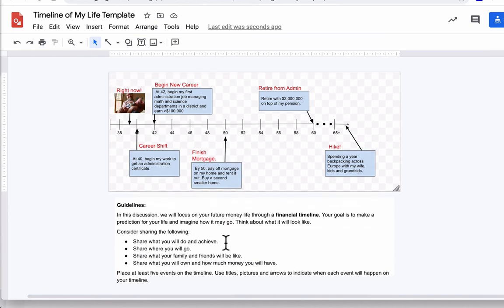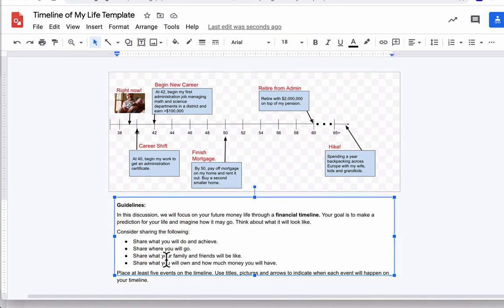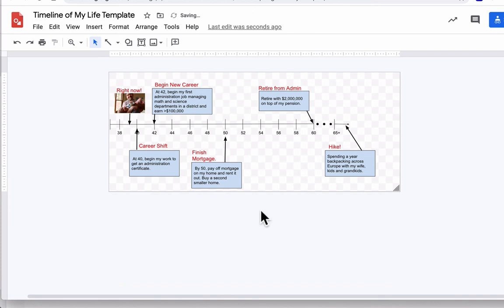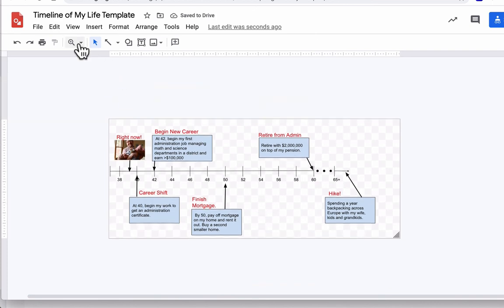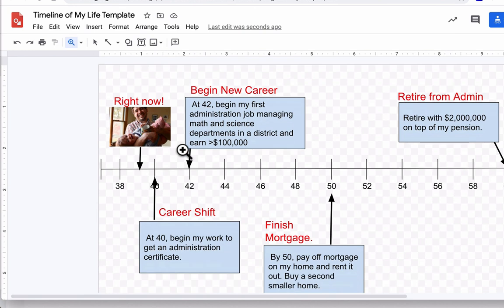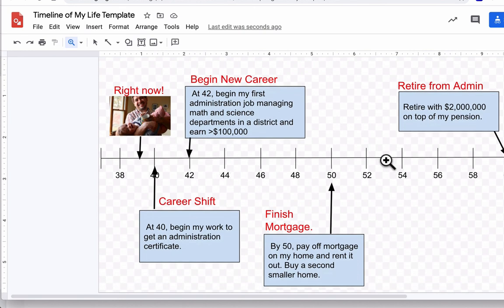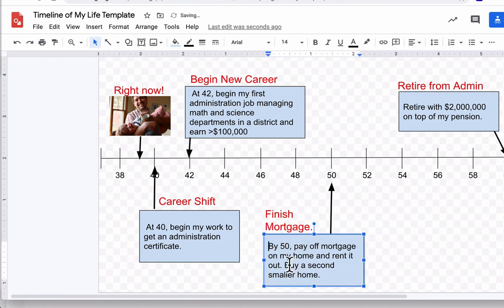Okay, I'm going to delete this extra arrow. I'm going to zoom out. And I don't need these guidelines anymore, but I'm just going to say that before you delete them, look through it, make sure you've considered everything here. And I'm going to delete it. Now this is my timeline. Now this timeline right here, I'm going to zoom in. I'm just going to look at it. Am I going to make edits? I might. Let's see what I think. Now career shift at 40, by 42 begin my first admin job. Okay, finish the mortgage by 50 and rent out my first home. Rent it out, fix that spacing.